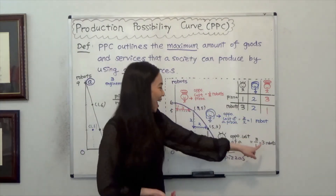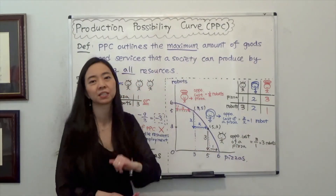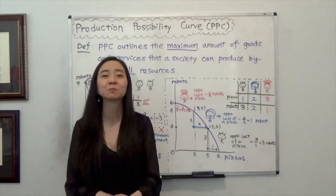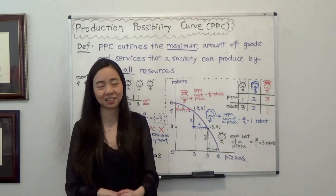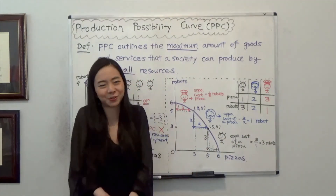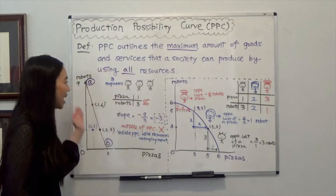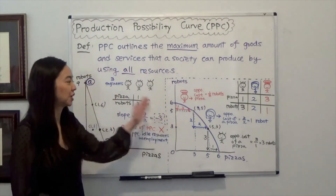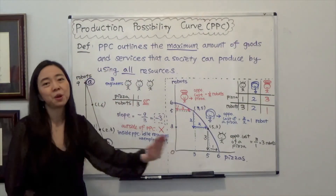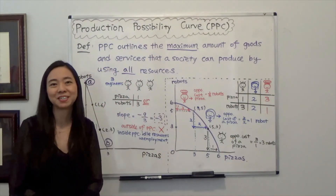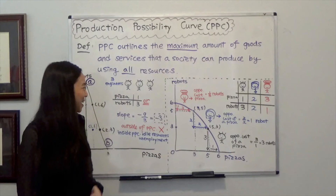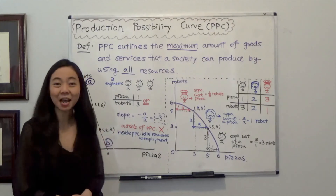You can see that the bow-shaped Production Possibility Curve is more realistic to the real world. This is why we have different shapes of production possibility curves. I hope this helps — see you next time.